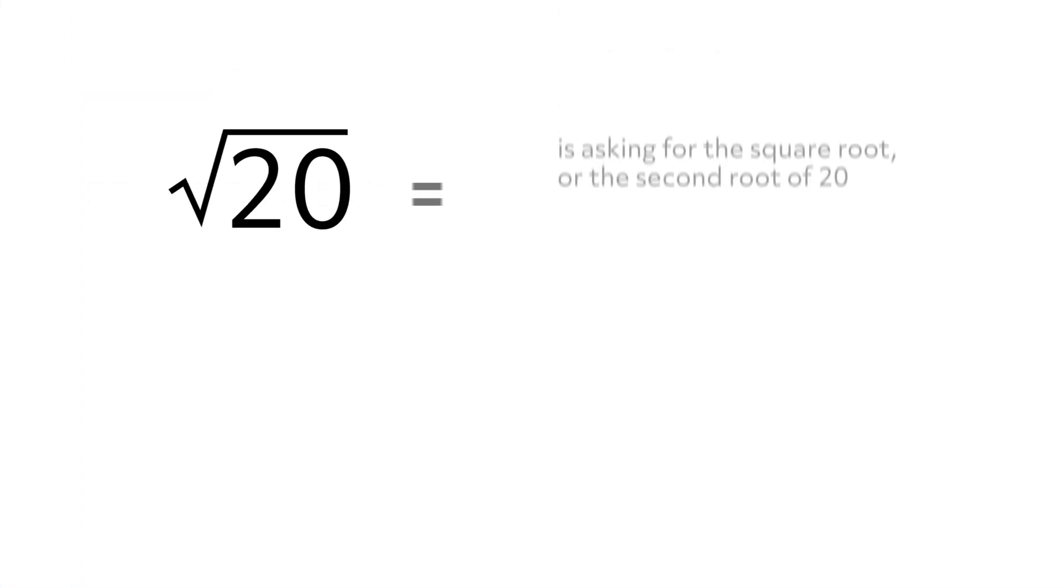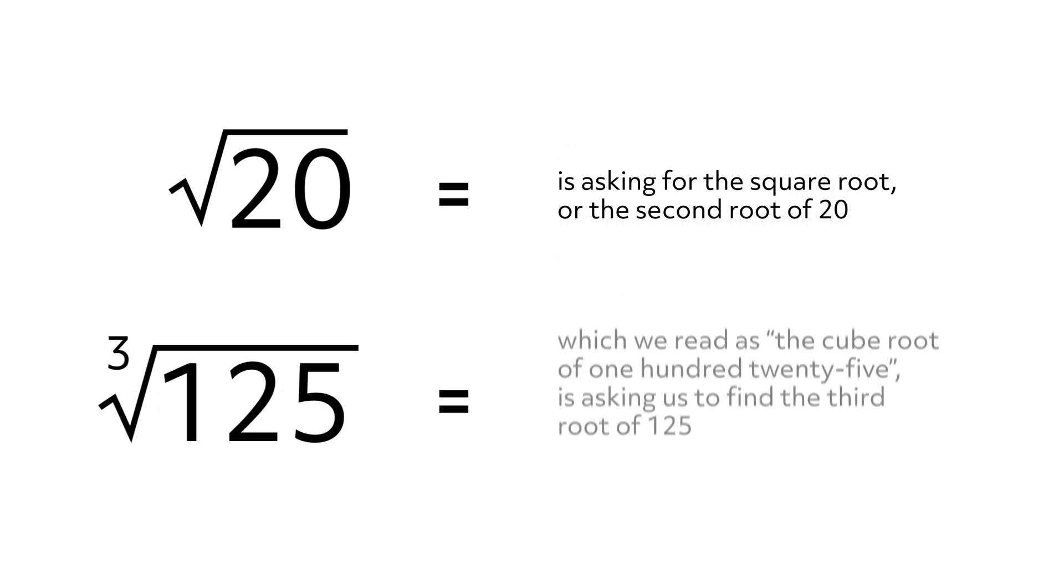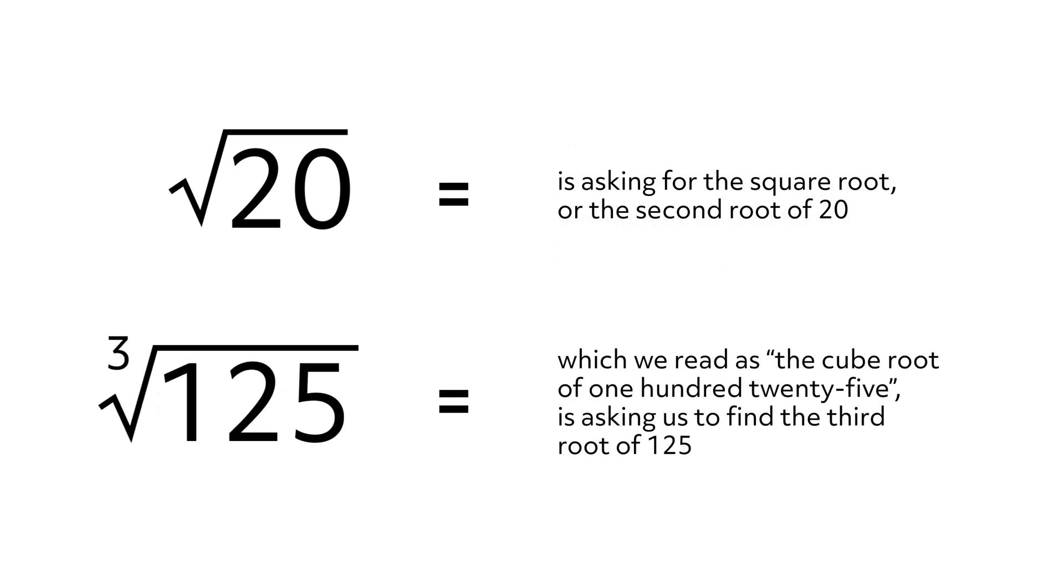For example, this is asking for the square root or the second root of 20, and this, which we read as the cube root of 125, is asking us to find the third root of 125.